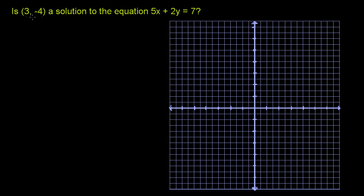So one way to do it is to substitute x = 3 and y = -4 into this and see if 5 times x plus 2 times y does indeed equal 7.